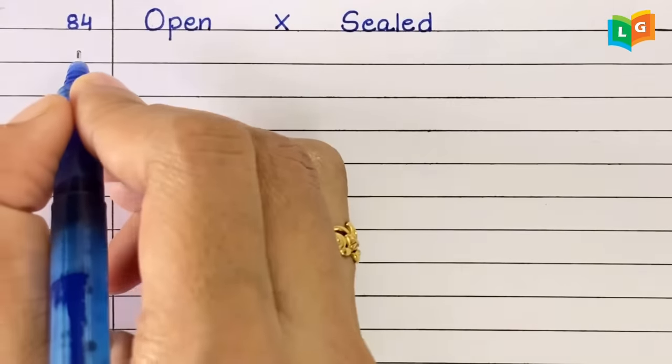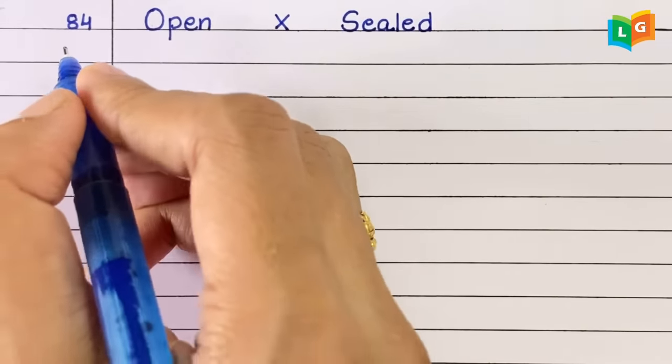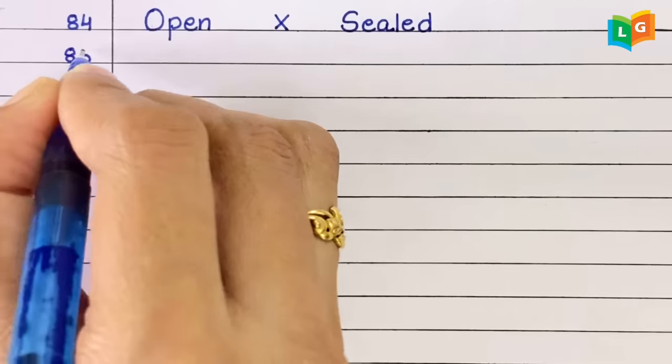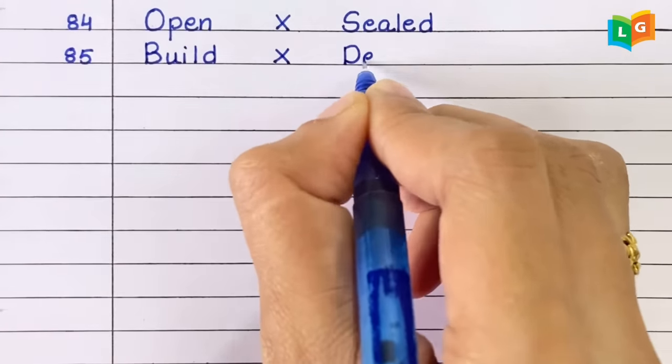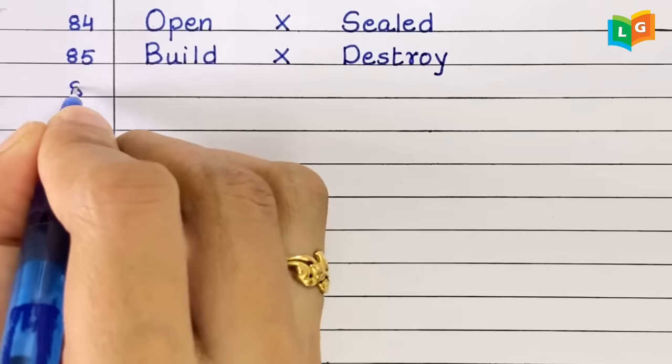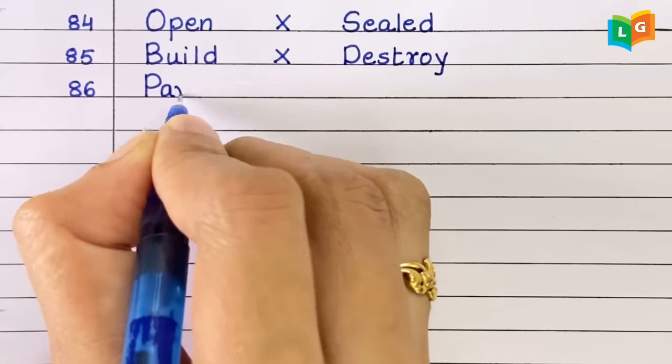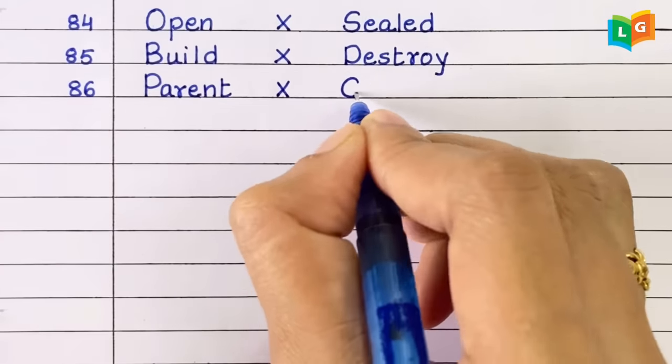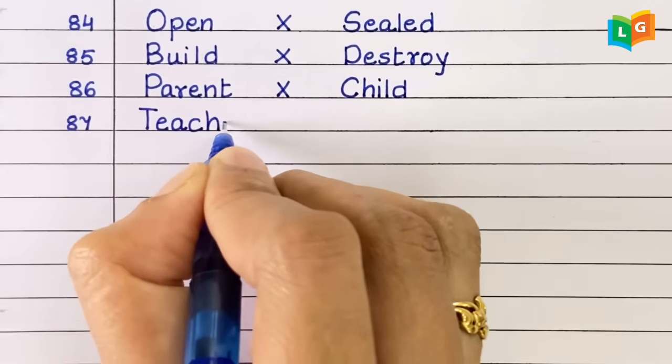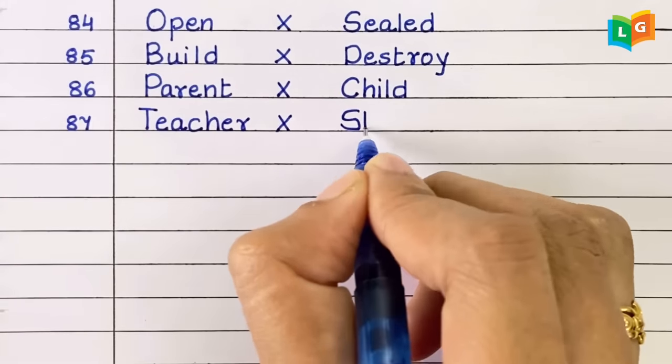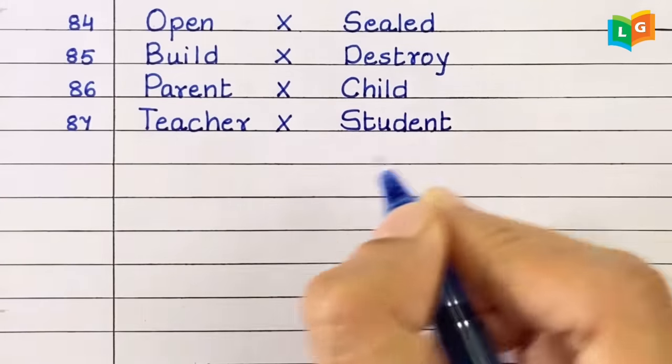Eighty-five, build, destroy. Eighty-six, parent, child. Eighty-seven, teacher, student.